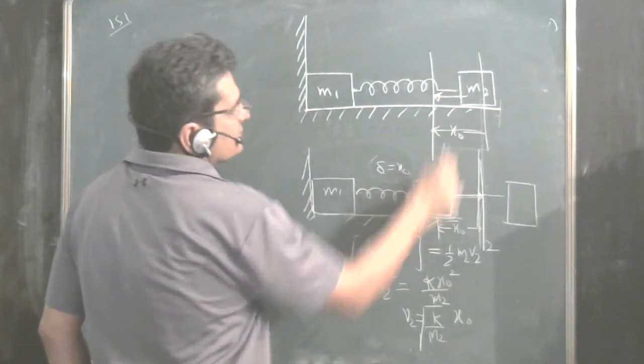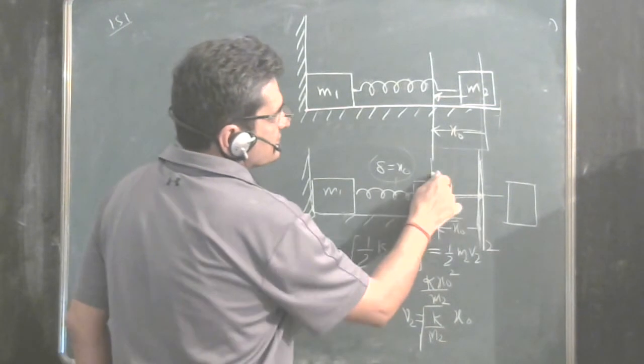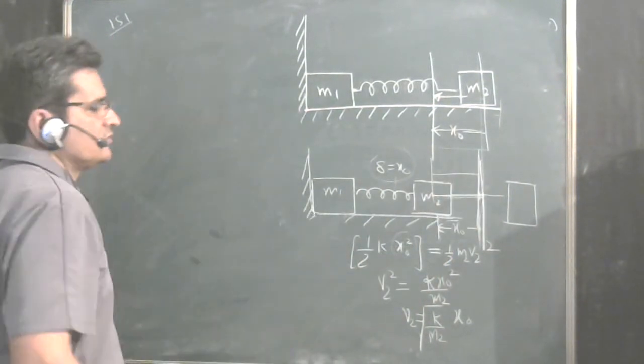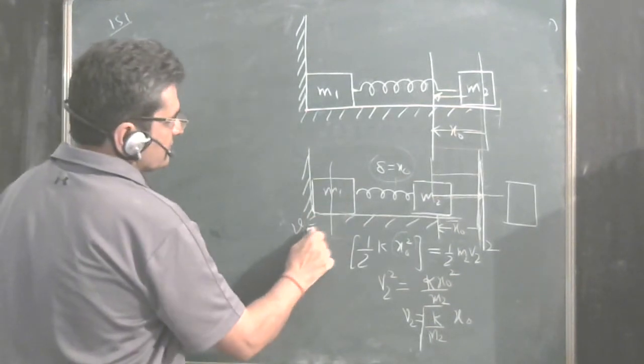It was compressed. It is moving backwards towards mean position. Till this time, till the mean position, M1 will not move. So velocity of M1 remains 0. V1 remains 0.